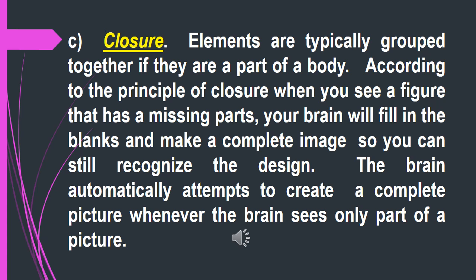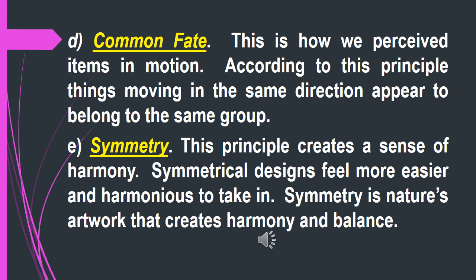The principle of Closure states that elements are typically grouped together if they are part of a whole. When you see a figure that has missing parts, your brain will fill in the blanks and make a complete image so you can still recognize the design. The brain automatically attempts to create a complete picture whenever it sees only part of a picture. The principle of Common Fate describes how we perceive items in motion — things moving in the same direction appear to belong to the same group.